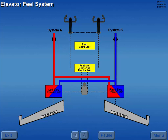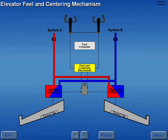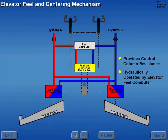The elevator feel system allows large elevator inputs at low speed and restrains elevator inputs at high speed by changing the resistance to control column movement. The elevator feel and centering mechanism provides control column resistance and is hydraulically operated by the elevator feel computer.